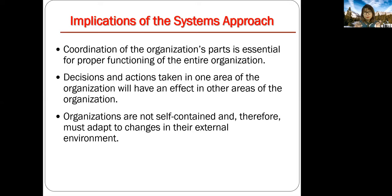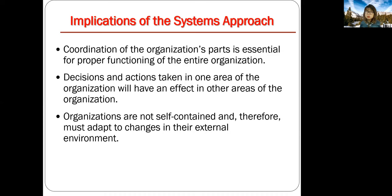A system is good, but what's the implication? If everything is interdependent, then if something happens to even a small part of the system, it's going to affect the entire system. Coordination of the organization's parts is essential for proper functioning. Decisions and actions taken in one area will have an effect on other areas. A manager needs to take care of the whole system — they cannot neglect any part of it. It's like neglecting your toe: it might affect the way you walk and your entire body function. The system is a whole unified thing you have to look at, not in piecemeal.